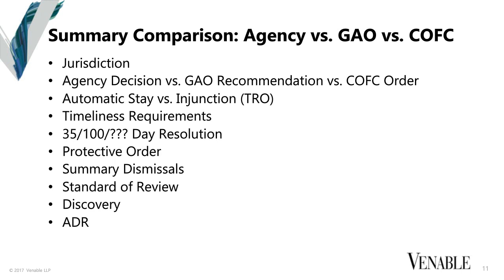It's important to keep in mind that although the protest trends seem to go up and down, the protest numbers are still lower than they were in the early 90s, so we're not at an all-time high. The way that the GAO tracks these cases can affect those numbers. On the next couple of slides we have a summary comparison of the agency versus the GAO versus the Court of Federal Claims. Jurisdictional issues are especially important with regard to task orders, where the GAO has task order jurisdiction and the Court of Federal Claims, except in very limited circumstances, does not.